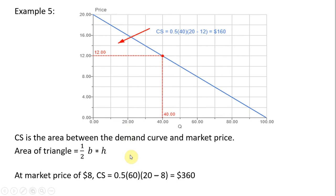We could calculate consumer surplus at a different market price. If the market price was $8, consumers are paying less and buying more, so consumer surplus should go up. Tracing out that triangle, it has a base of 60 and a height of 20 minus 8, or 12. Using the formula, that adds up to $360. I hope you found this video beneficial.